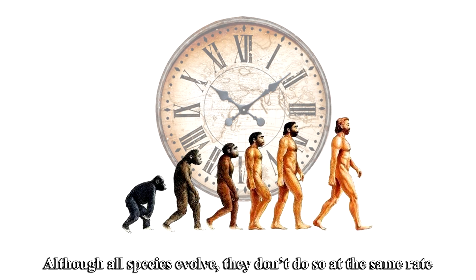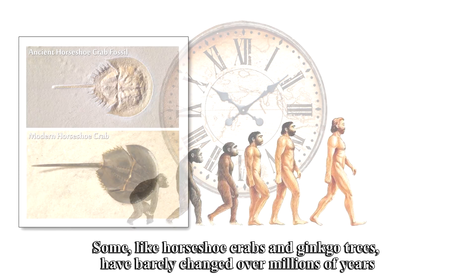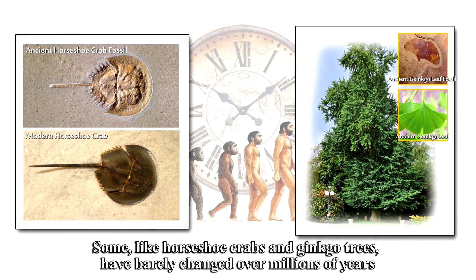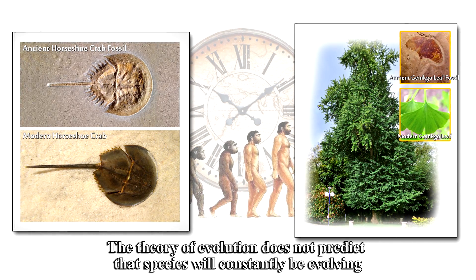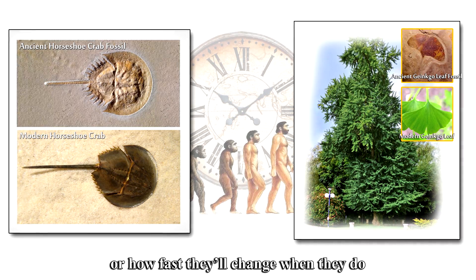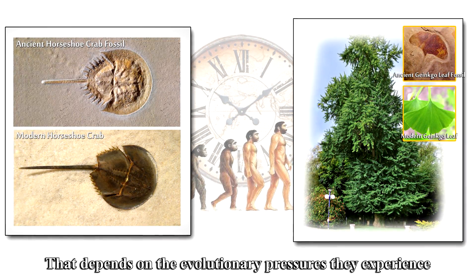Although all species evolve, they don't do so at the same rate. Some, like horseshoe crabs and ginkgo trees, have barely changed over millions of years. The theory of evolution does not predict that species will constantly be evolving, or how fast they'll change when they do. That depends on the evolutionary pressures they experience.